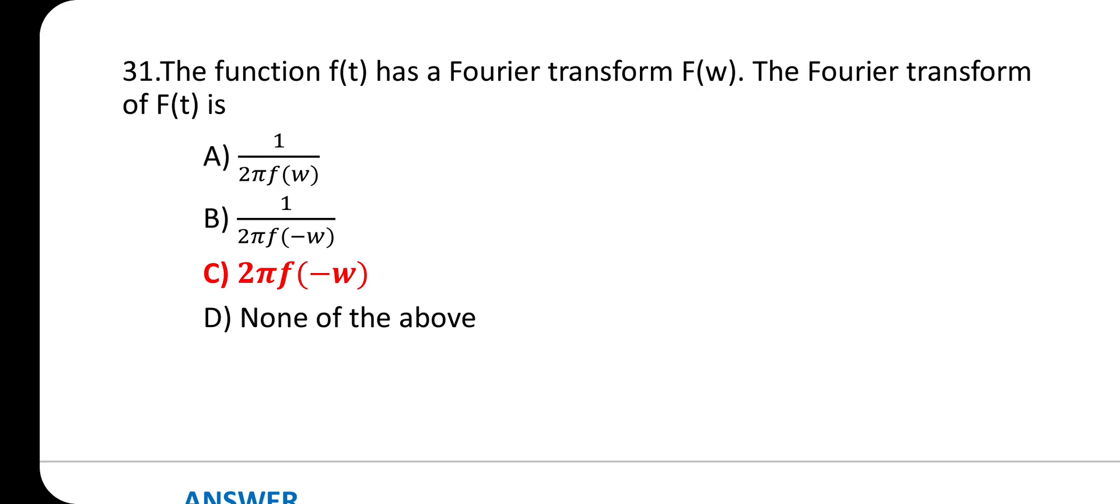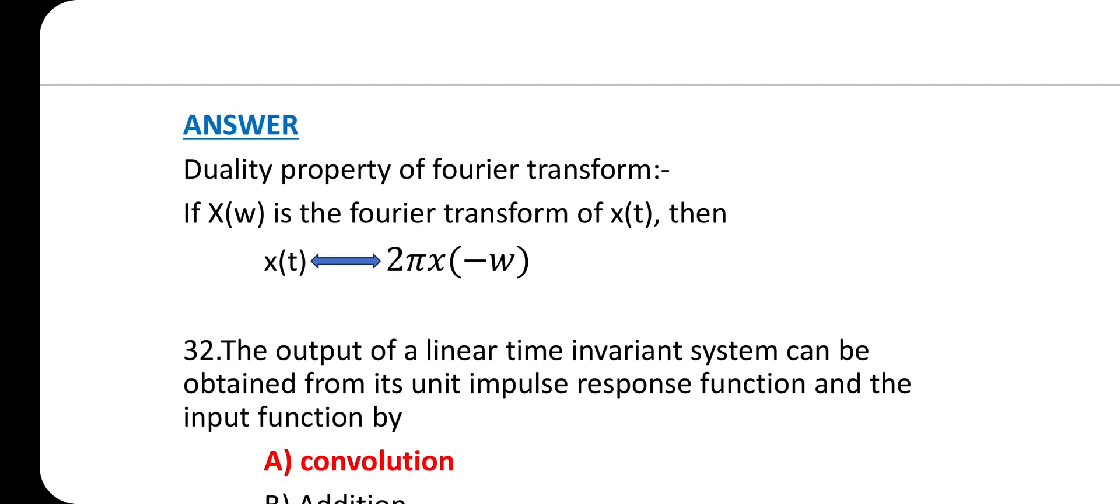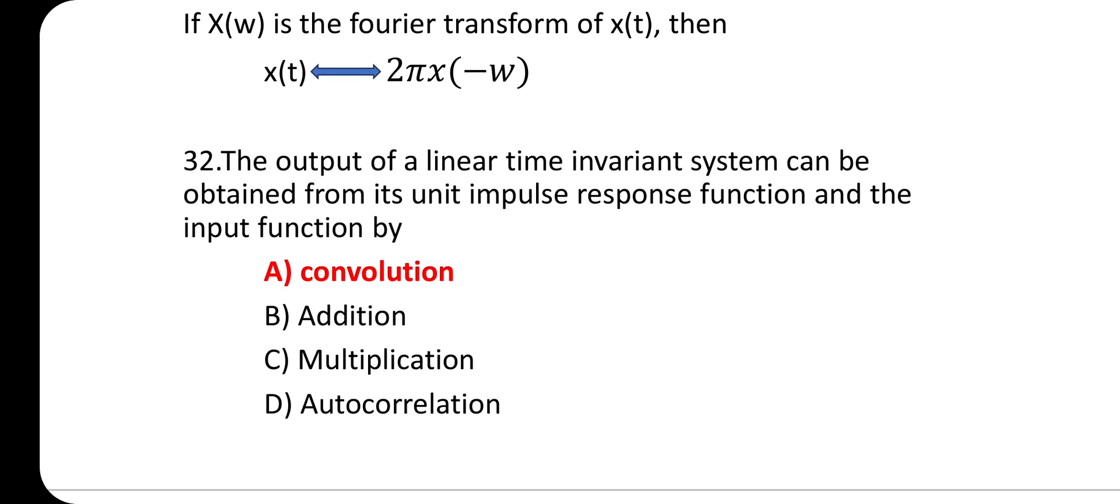Question 31: The function f(t) has a Fourier transform f(ω). The Fourier transform of f(t) is option C: 2πf(-ω). Duality property of Fourier transform: If x(ω) is the Fourier transform of x(t), then x(t) = 2πx(-ω).